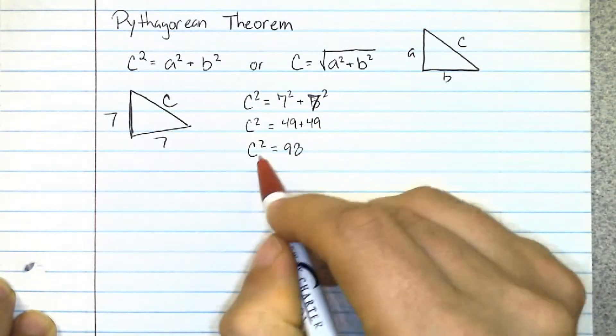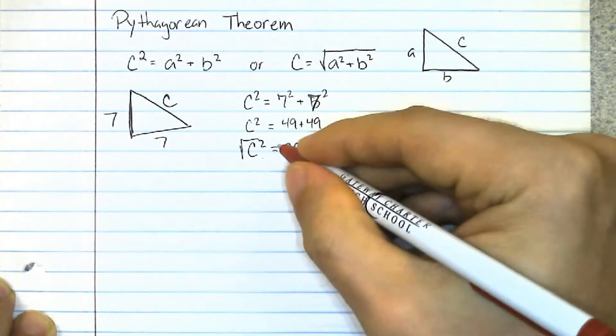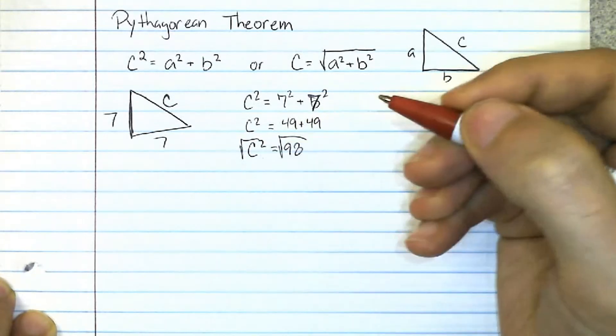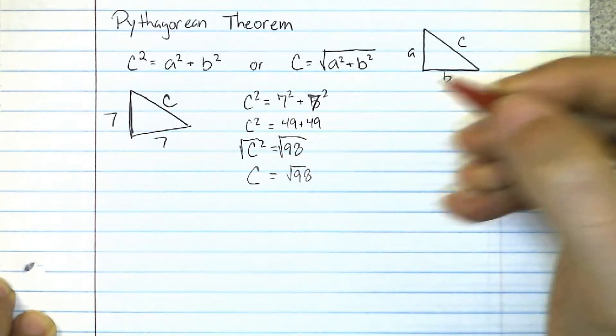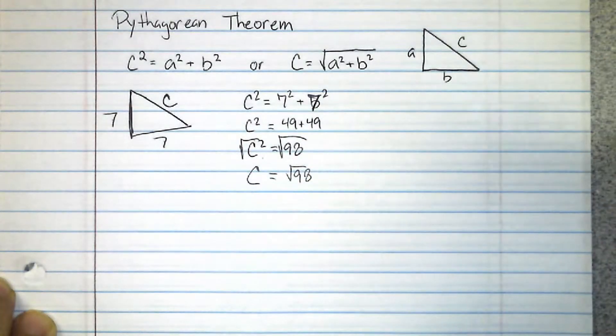Since I want to know what c is, not what c squared is, square root of both sides - this radical and the square cancel out, leaving c equals square root 98. Square root 98 would be somewhere around 9.9 if you needed to estimate.